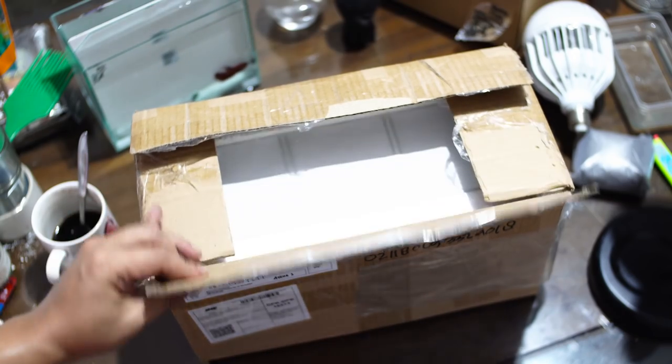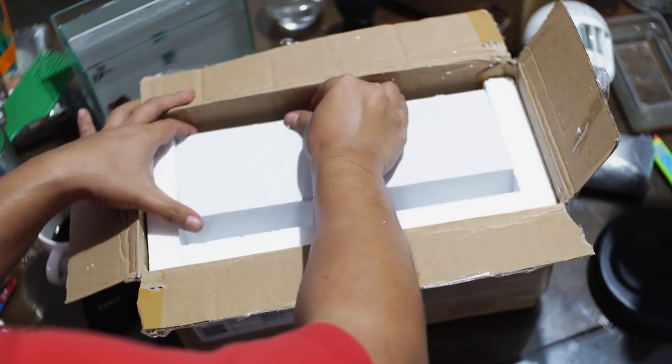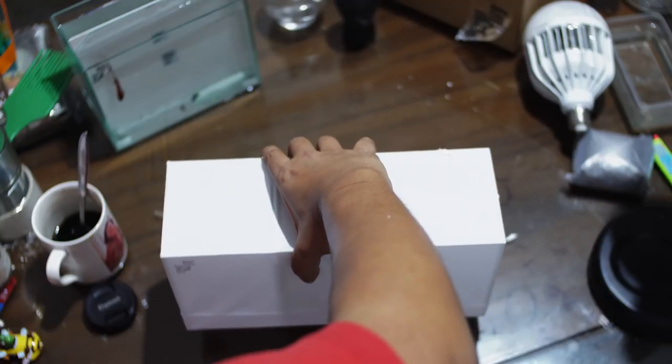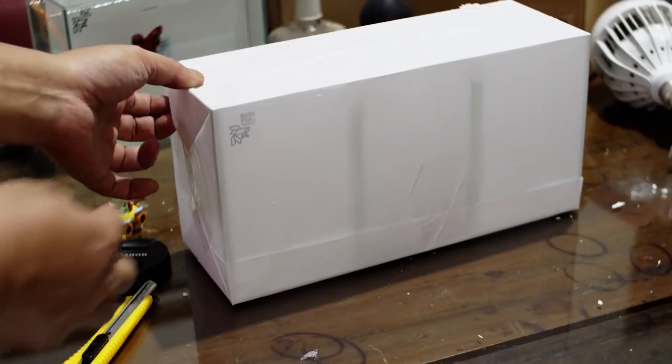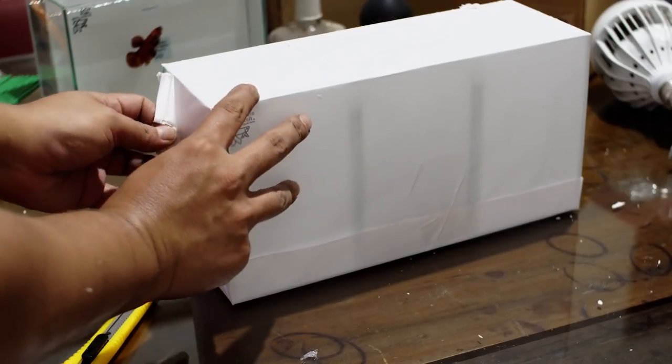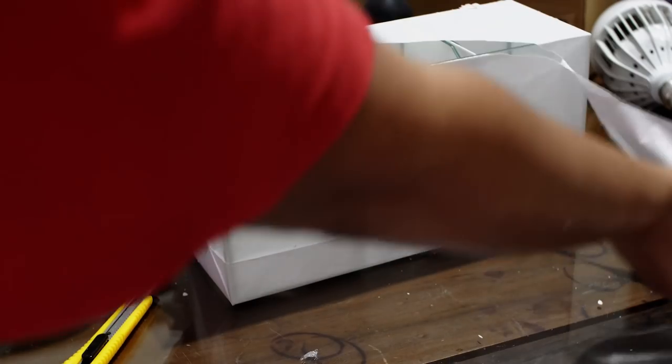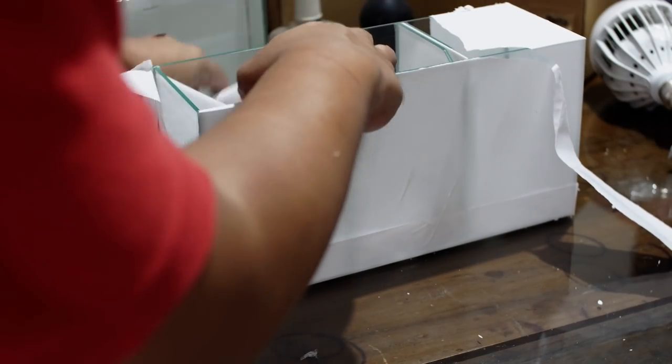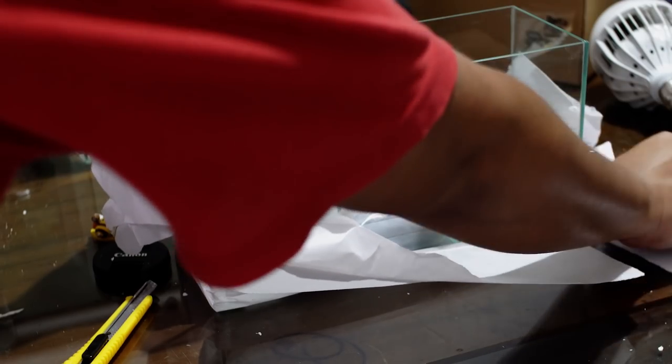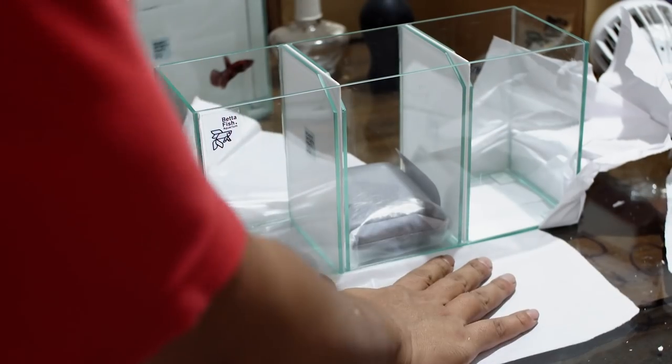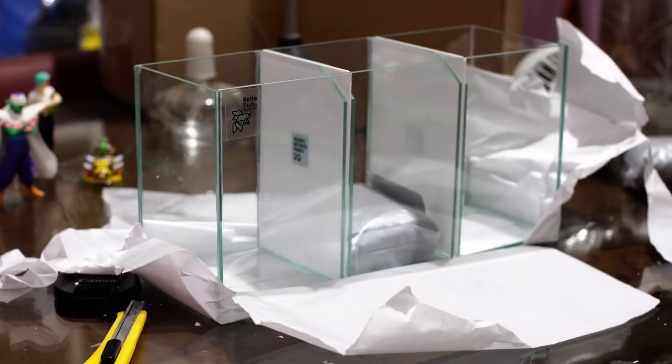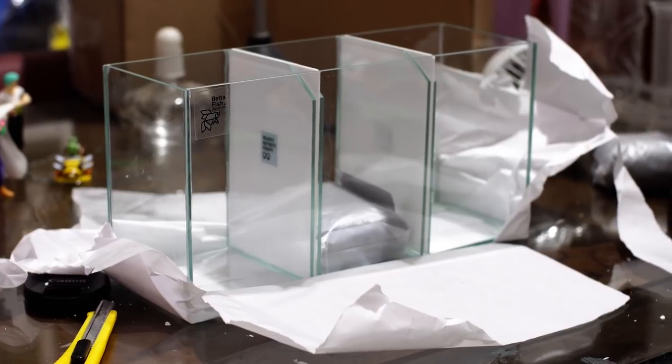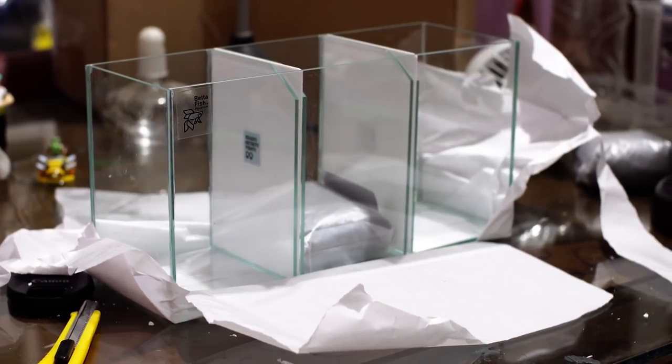Produk yang terakhir adalah beta barak kalau orang bule bilang ya. Yaitu aquarium yang disekat jadi tiga soliter. Sama kayak produk sebelumnya. Ini rapi banget, bersih banget, dan kinclong banget. Jadi ini nggak bikin malu lah kalau lu taruh di meja kerja atau di ruang tamu lu.